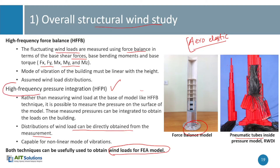Both HFFB and HFPI are called 'high frequency' methods because the reduced-scale physical model has a significantly higher natural frequency than the actual building. The model must be very stiff so that the recording of wind forces at the base or surface is not distorted by the building's own dynamics. This allows us to differentiate between the aerodynamic forces and the structural response.